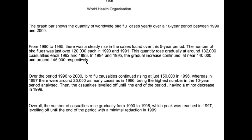Very good. As you can see, we've kind of fallen into a list — we're going into every single year. We could improve that by saying 'the following year', 'the preceding year', 'the next five years', 'the next two years'. This way we can introduce more variety into our language and our report. Over the period 1996 to 2000, bird flu casualties continued rising — and then we have to say 'a rate' if we're using 'at' — continued rising to 150,000 in 1996, whereas in 1997, well done for using the comparison.